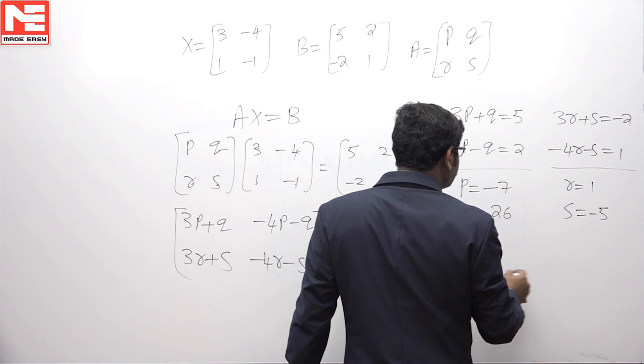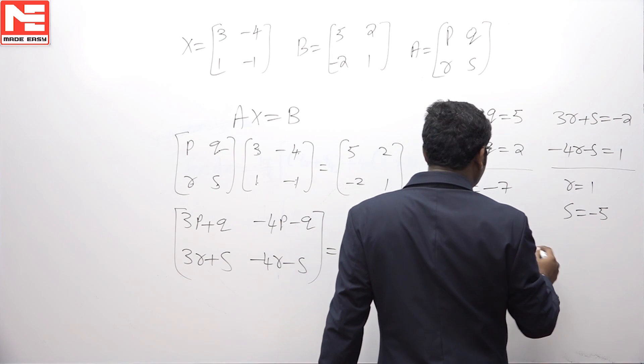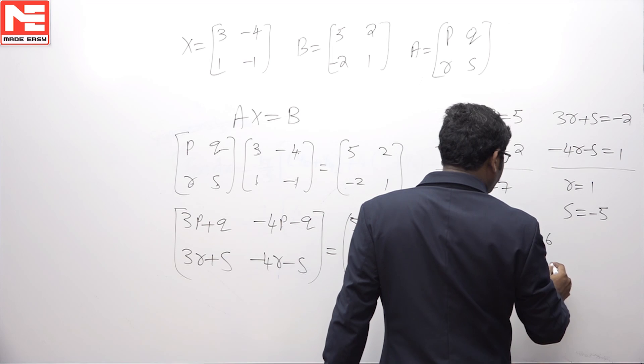Therefore, matrix A is minus 7, 26, 1, minus 5.